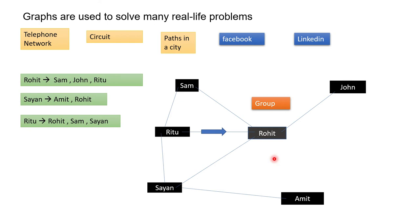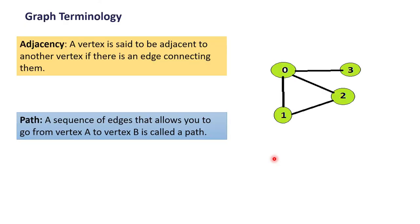Now we have to know a few terminologies about graph. One is adjacency. A vertex is said to be adjacent to another vertex if there is an edge connecting them. So if you see here, there is an edge present between one and two, meaning they are adjacent. Similarly, zero and one are adjacent because there is an edge connecting both. But if you see, one and three are not connected by one edge, so one and three are not adjacent. Similarly, three and two are also not adjacent.